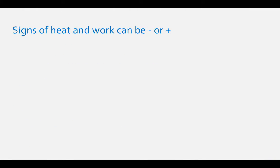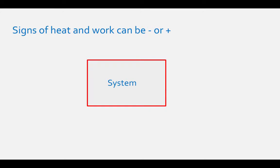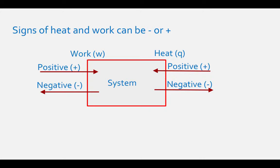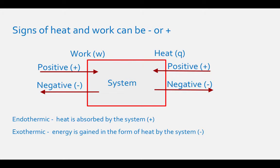The signs of these variables are important because work and heat can both be negative or positive. In the diagram, the system is represented by a box. Work done on a system is positive work, and work done by the system is negative work. Heat absorbed by the system is positive heat, and heat released by the system is negative heat. Endothermic reactions are ones in which heat is absorbed by the system, and the heat is positive. Exothermic reactions are ones in which energy is released as heat, and the heat is negative.